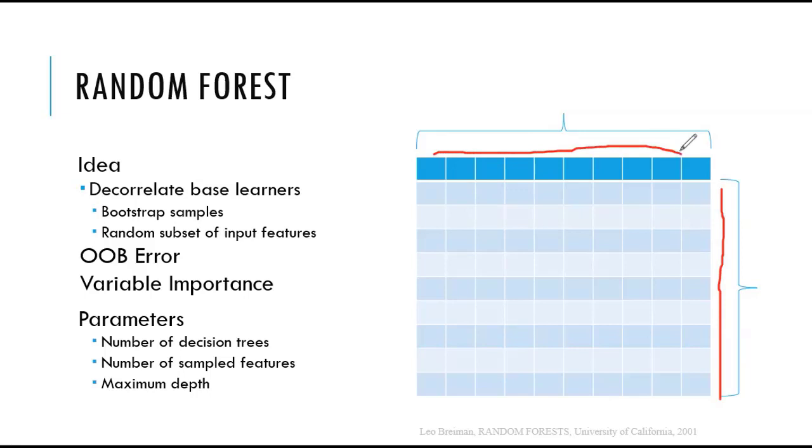So every learner looks at a subset of the data, subset of the features. Providing random subset of input features to every individual learner decorrelates those learners by learning trees based on randomly chosen subset of input variables.